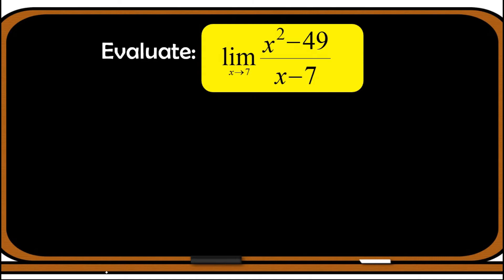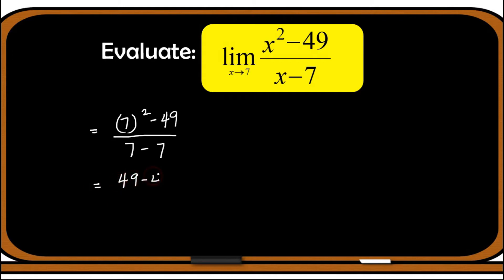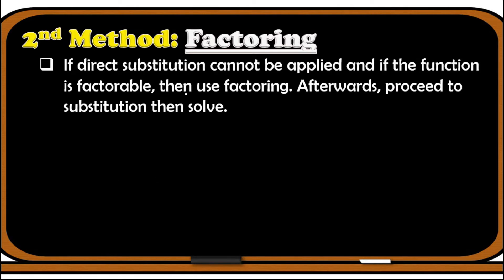Now consider this problem: evaluate the limit of x squared minus 49 over x minus 7 as x approaches 7. If we apply direct substitution, the numerator becomes 49 minus 49 and the denominator becomes 7 minus 7, giving us 0 over 0, which is not allowed. Therefore, we cannot use direct substitution here. Observing the function, there is a common factor between numerator and denominator, so we can apply factoring — the second method. If direct substitution cannot be applied and the function is factorable, use factoring, then proceed to substitution.